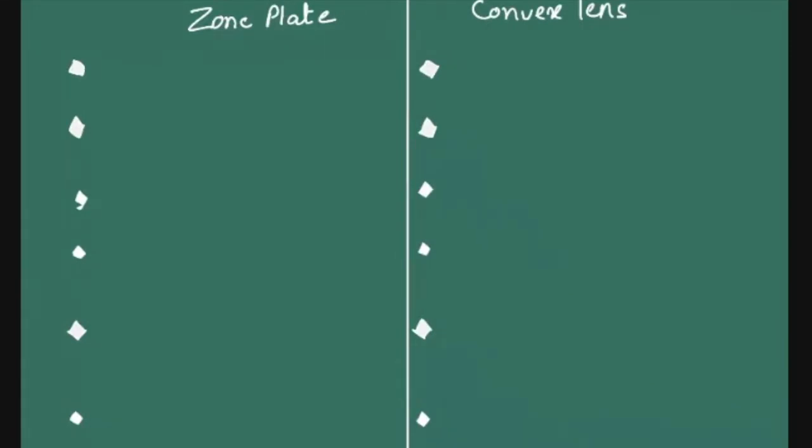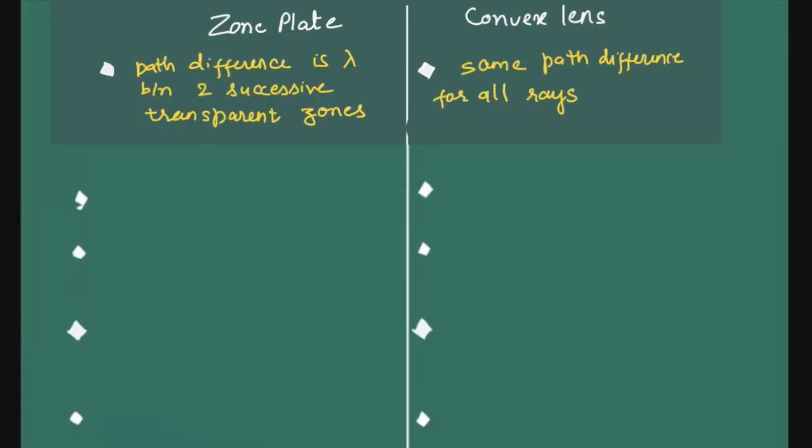Whereas, in convex lens, there is no path difference between the rays which are making the image. So all reach with no path difference. Same path difference. Whereas, path difference is lambda between two consecutive transparent zones, we will say.